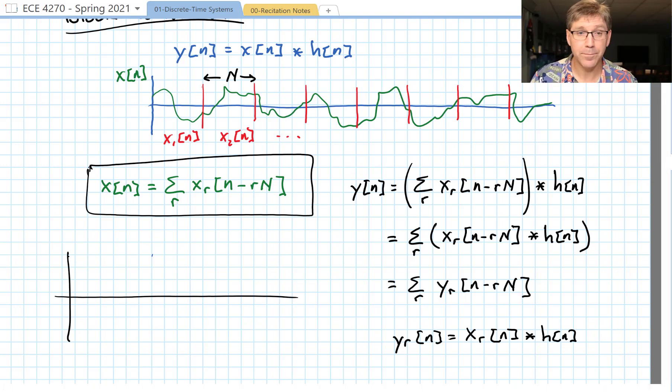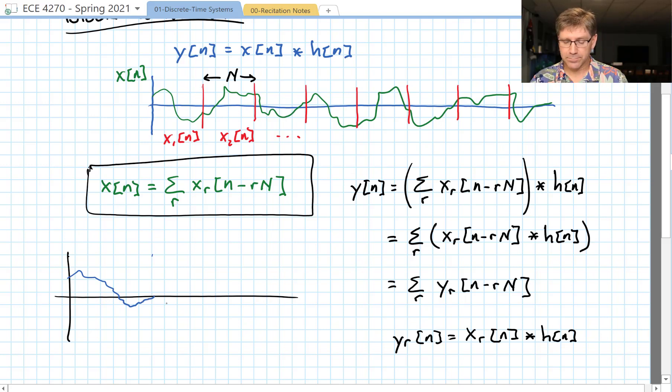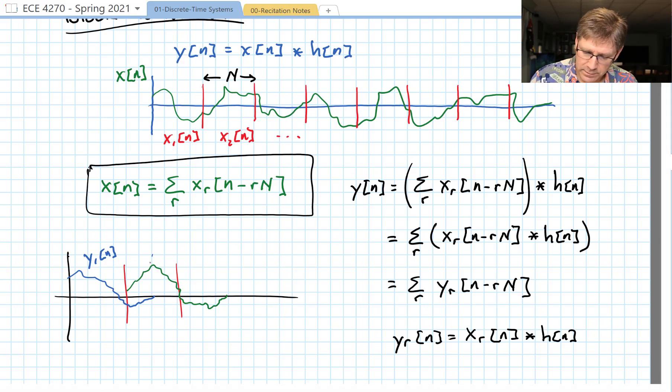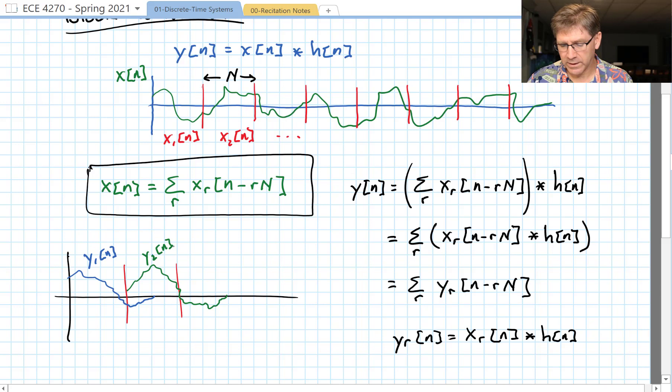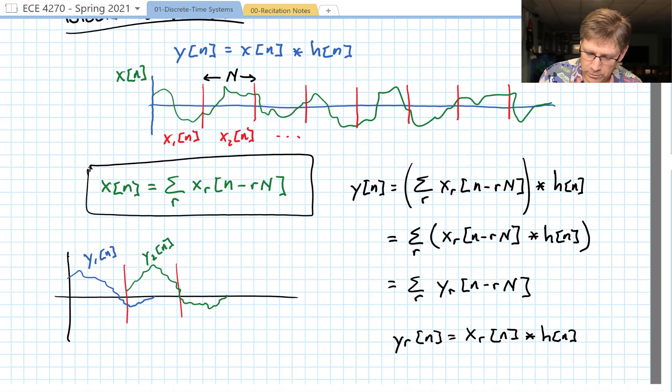So for y[n] we're going to get some signal coming out, maybe like that. Let's label this y1[n]. y2 is going to be something maybe like that. And y2[n], now it's shown shifted there. I just didn't add in the minus n and so on and so forth because of the way I've drawn it. So in essence then we need to sum these up.